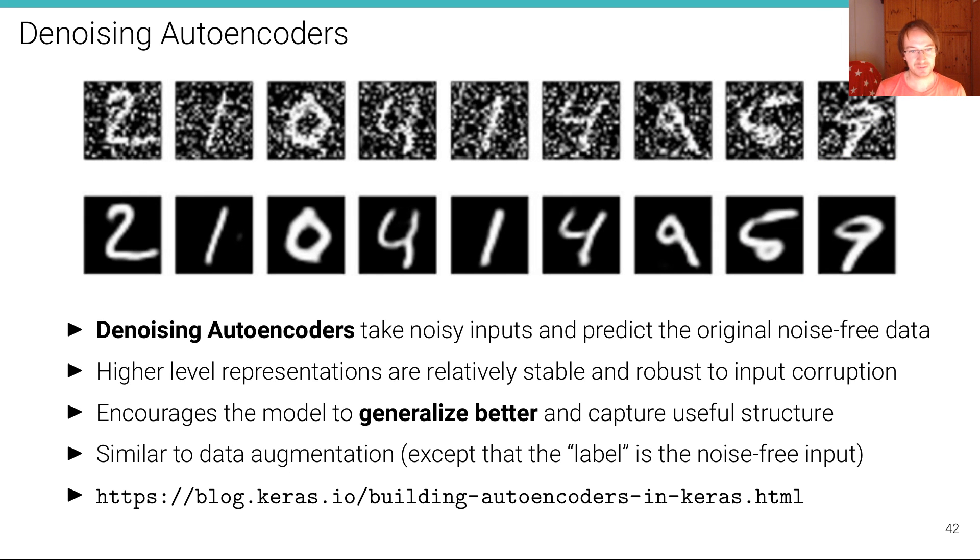And finally, one thing I wanted to show you is a denoising, so-called denoising autoencoder. A denoising autoencoder is an autoencoder that takes noisy inputs and predicts, tries to predict the original noise-free data. So we're giving a noise-free data set like MNIST and we're adding some noise to it, adding some Gaussian noise to it. And the idea of such a denoising autoencoder, and here this is the result, you can see that these digits are denoised quite well. The idea is that by adding this noise, we get more stable, more higher level representations that are robust to these input corruptions. And that this encourages the model to generalize better and capture more useful structure and statistics in the data and doesn't overfit as much as a regular autoencoder. And the idea is very similar to data augmentation. It's basically just doing data augmentation to the input, except that now we don't have a supervised learning problem, but the label is the noise-free input itself.